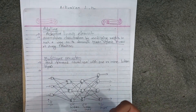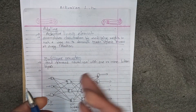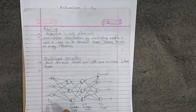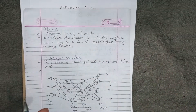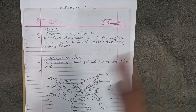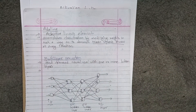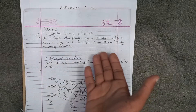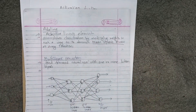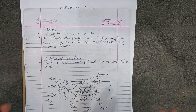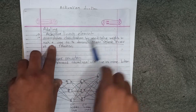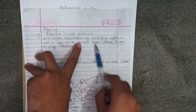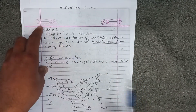In simple perceptron, the error is calculated differently compared to ADALINE. It is called the ADALINE network.